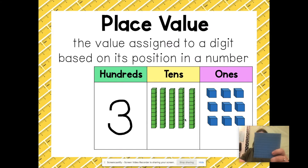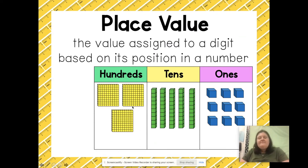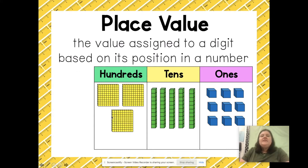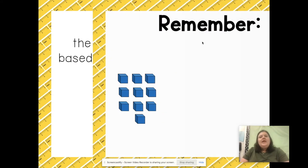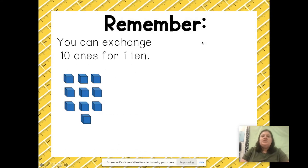A flat is 100 ones stacked on top of each other, or 10 rods stacked on one another. I can have three of those, and by having three I am showing three hundreds. So using place value blocks I have three hundreds, five tens, and nine ones — that's 359.